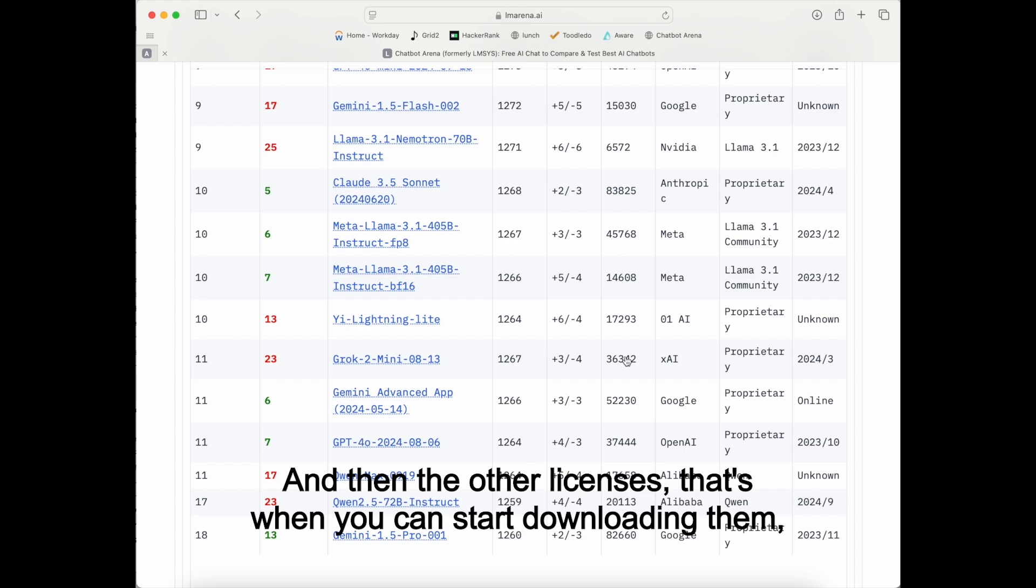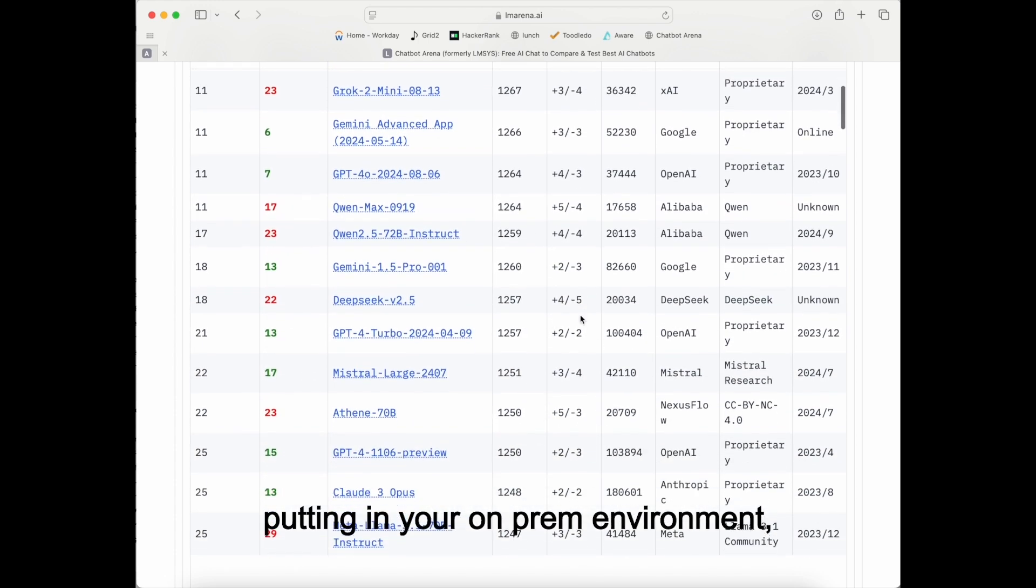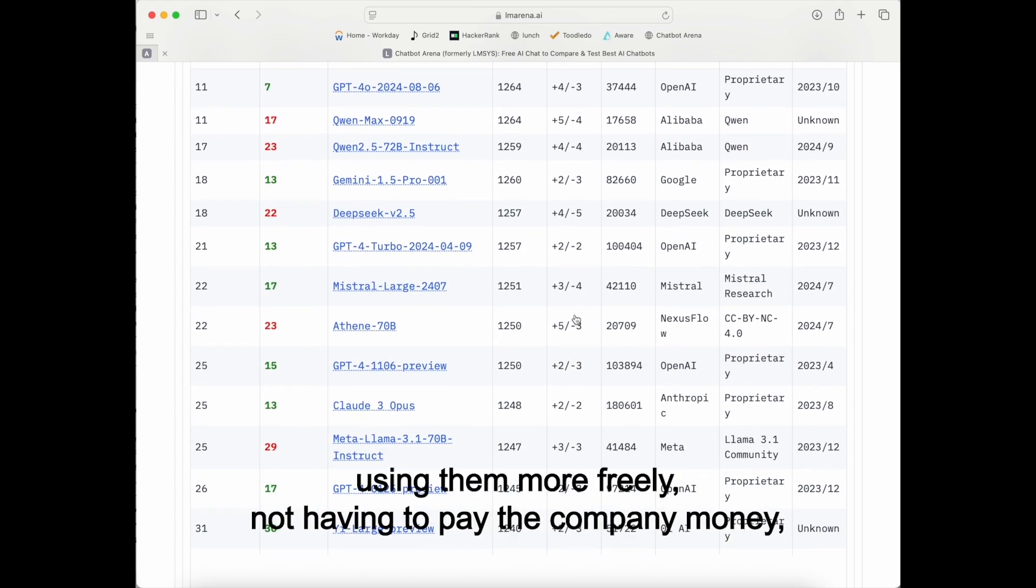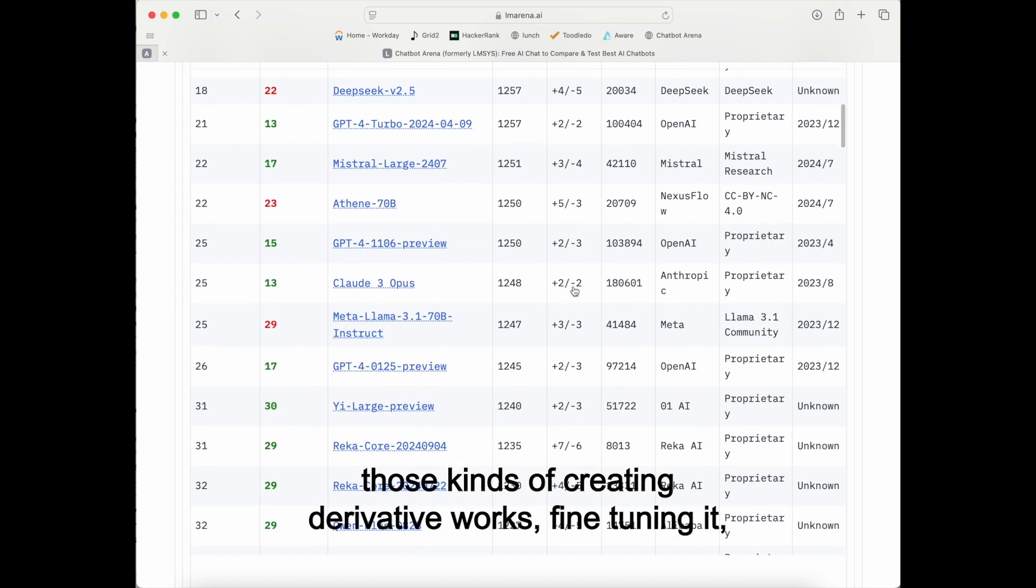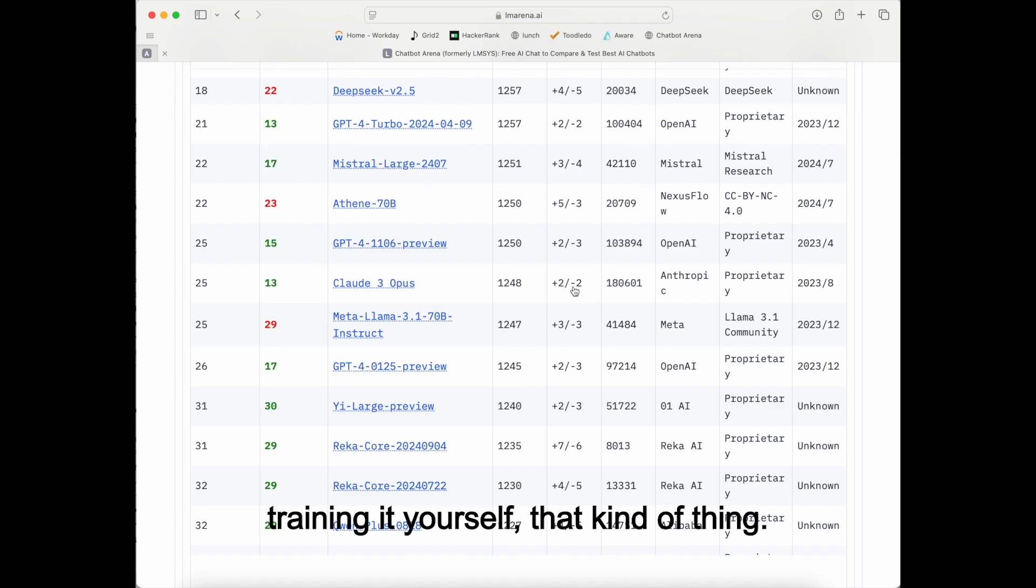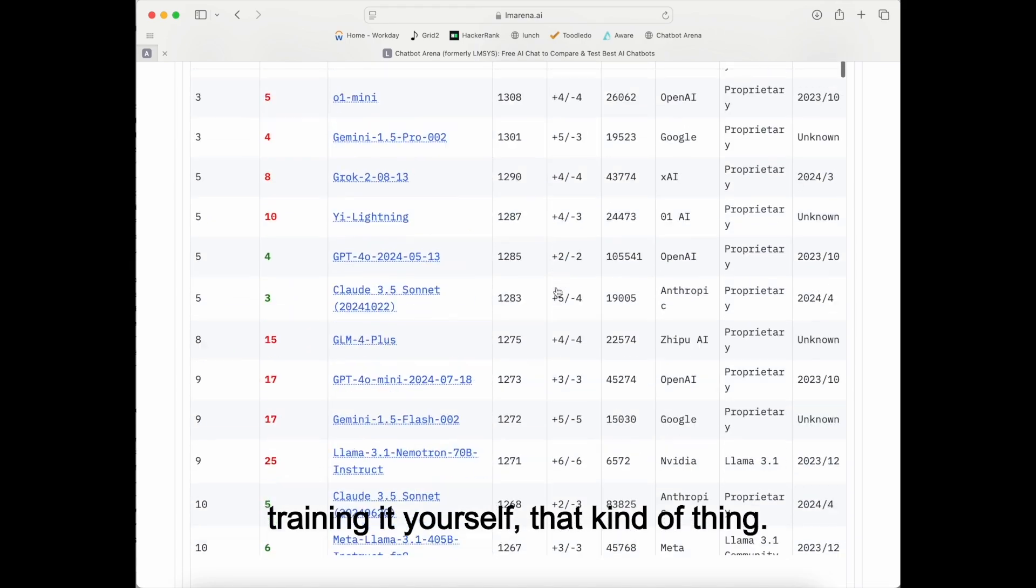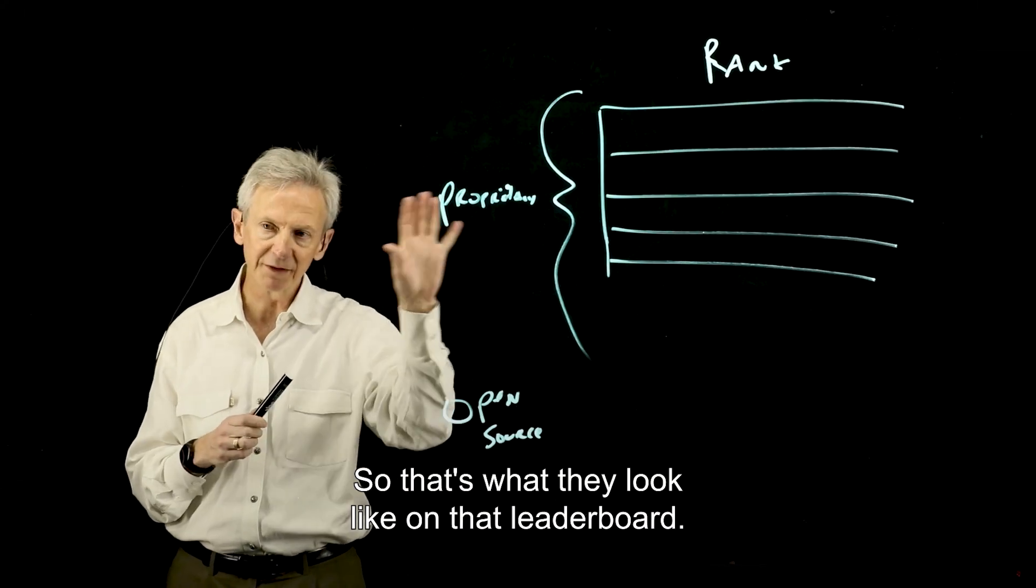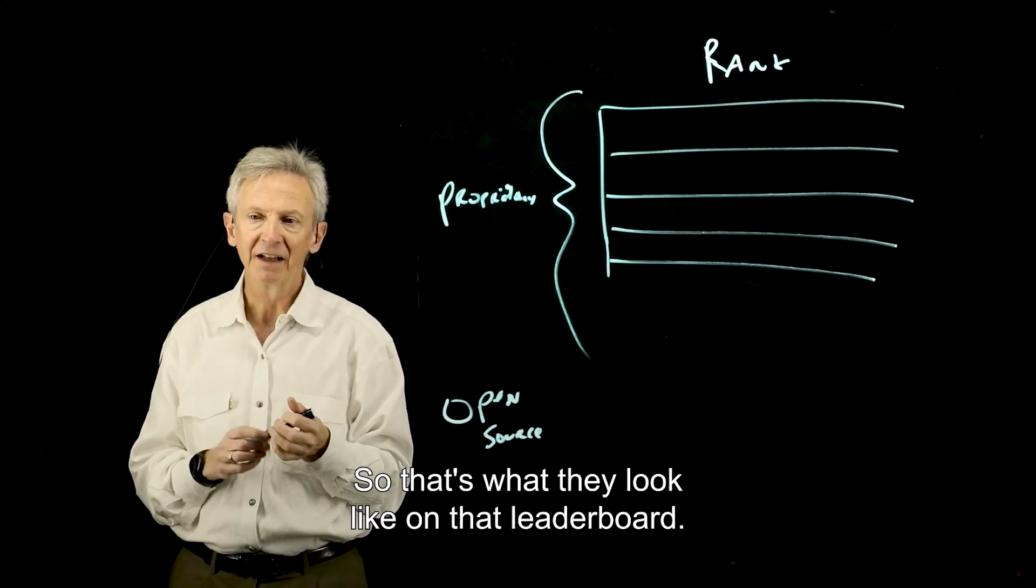And then the other licenses, that's when you can start downloading them, putting in your on-prem environment, using them more freely, not having to pay the company money, those kinds of creating derivative works, fine-tuning it, training it yourself, that kind of thing. All right. So that's what they look like on that leaderboard.